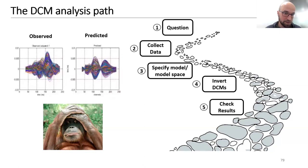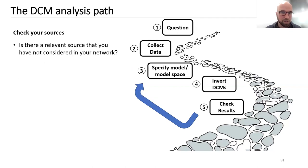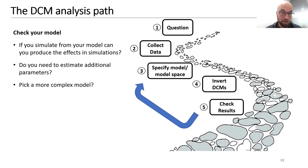If the fit is poor, go back to the beginning: first check your data for pre-processing errors, artifacts, or high-frequency noise. Next check your sources — is there a relevant source not considered in your network? Then check your model — can you produce the observed effects in simulation? Do you need additional parameters or a more complex model? Go through this cycle a few times and hopefully it will work.